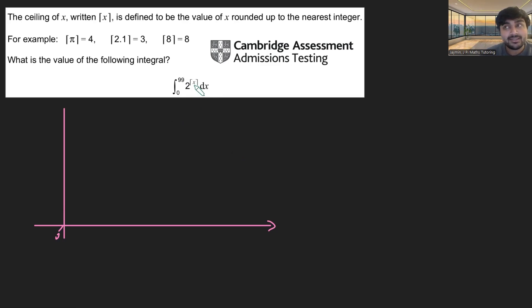Here I need to be careful of what happens when x is an integer. When x is between 0 and 1, the ceiling of x is just 1. So, I'm going to start my graph between x is 0 and x is 1. It's going to be 2 to the 1. So, it's just going to be a horizontal line there at 2.